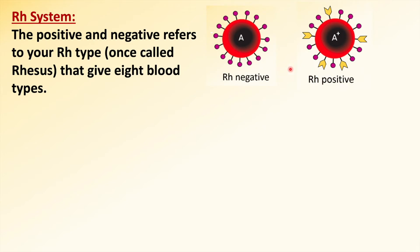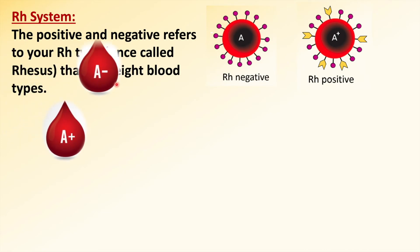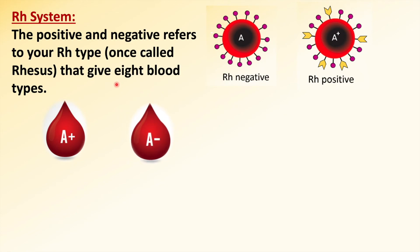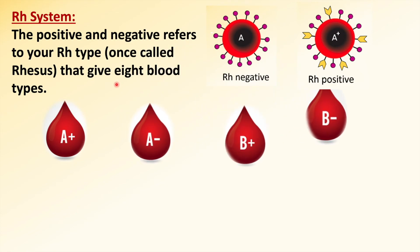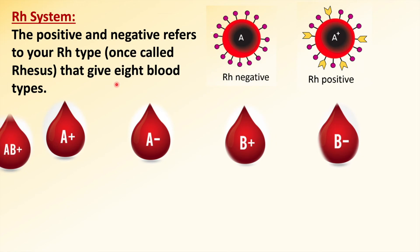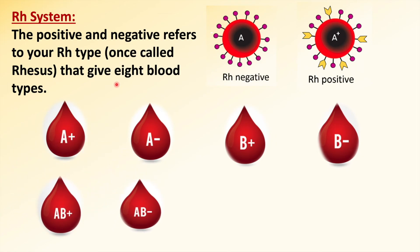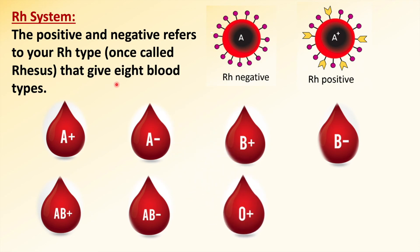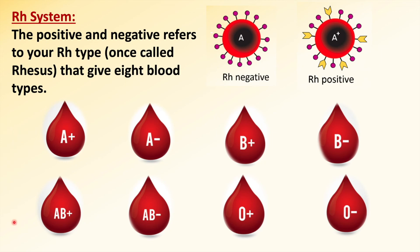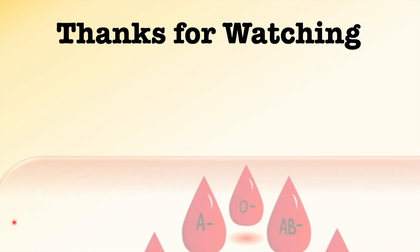Once we add RH to A and B, we start having eight blood groups, not only four. They are: A positive, A negative, B positive, B negative, AB positive, AB negative, O positive, and O negative. So, we have eight blood groups according to the ABO system and RH system. That's all — thanks for watching!